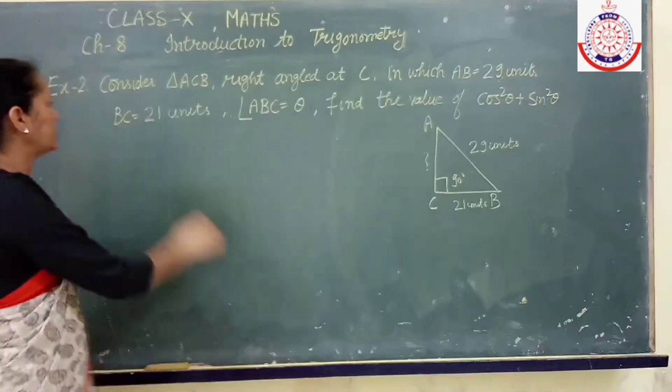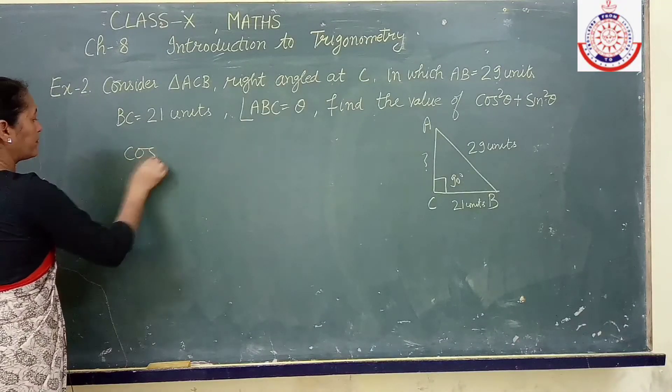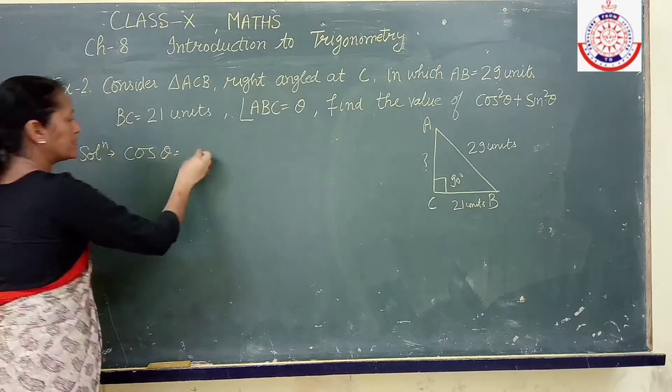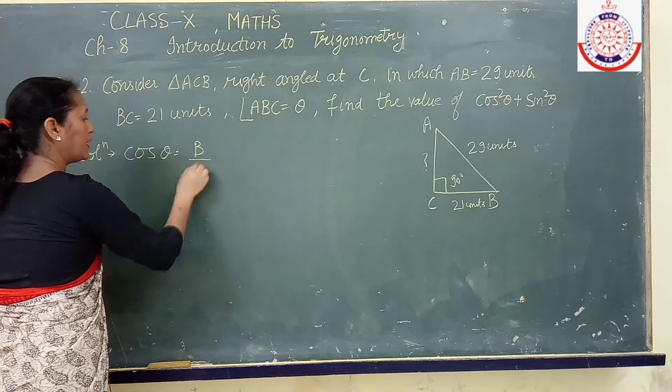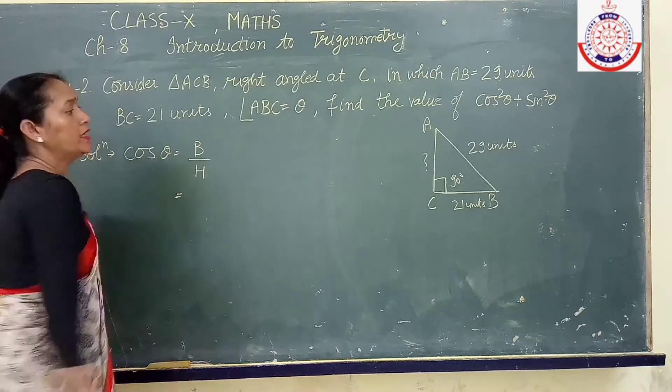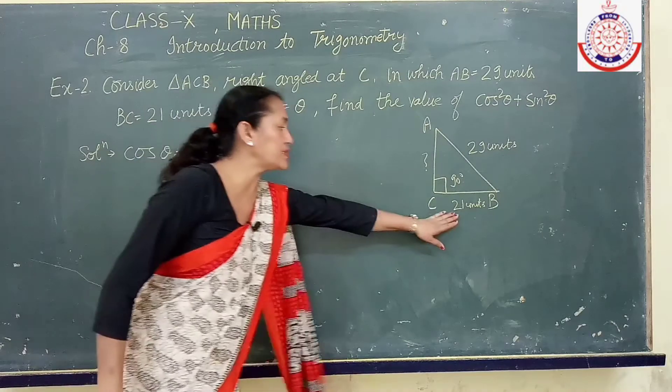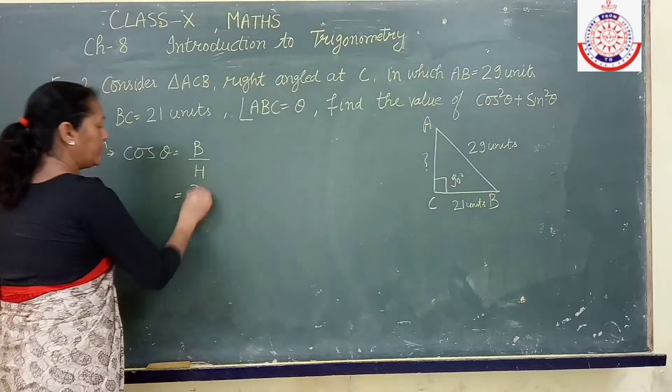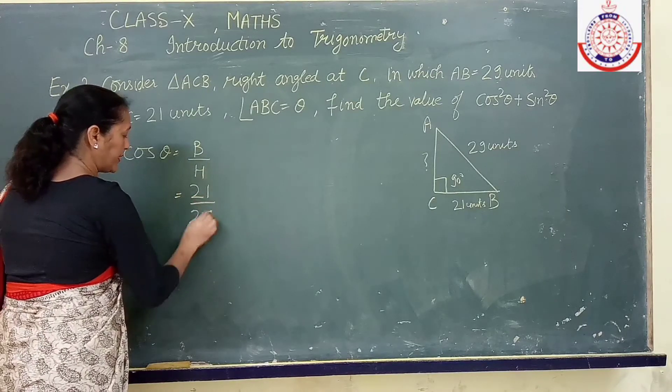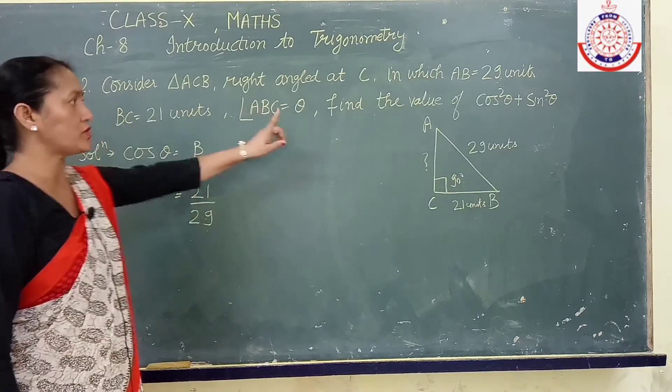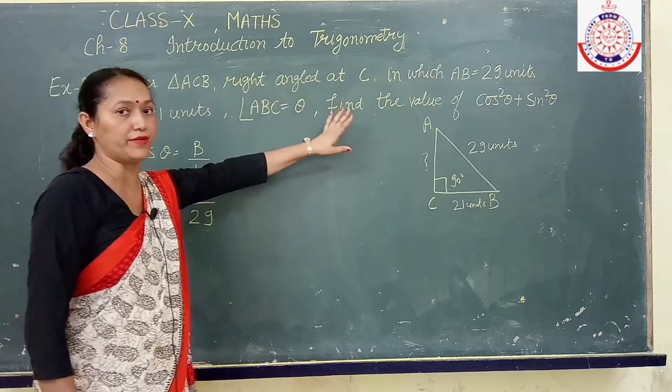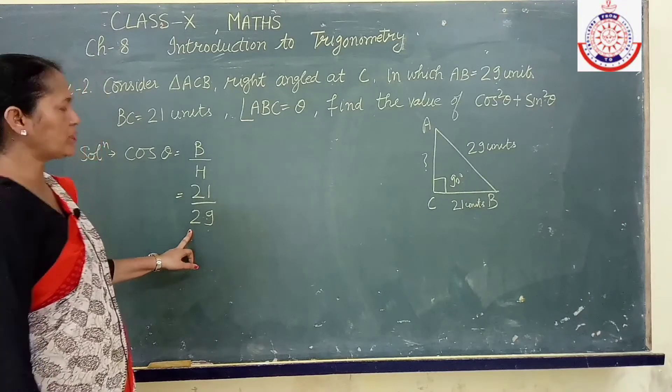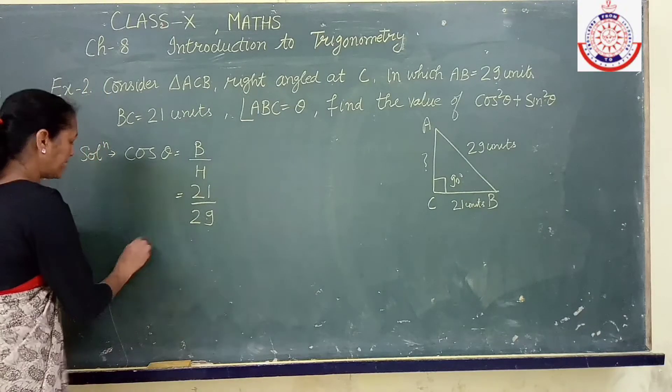So first of all we have to obtain the values of cos theta and sine theta. For cos theta we have learnt formula of cos theta is base upon hypotenuse. Here base is 21, hypotenuse is 29, you will get your value 21 upon 29. Now I am not taking K because ratio was not given, actual values were given to us.